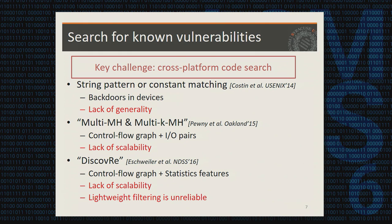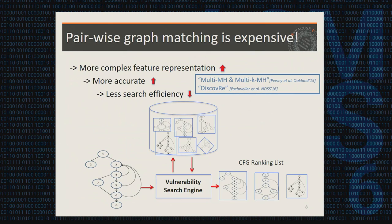Two recent works use control flow graphs, extracting features and performing graph-level matching to find vulnerabilities. One published at Oakland 2015 extracts I/O pairs by performing random execution, which is quite expensive. A later paper called Discovery, published at NDSS, also extracts features from control flow graphs but uses more lightweight statistical features. It's more efficient but still lacks scalability, and its pre-filtering approach significantly hurts accuracy.